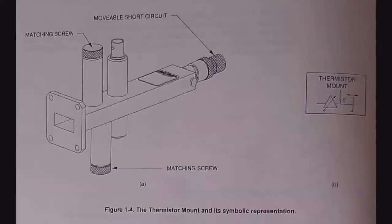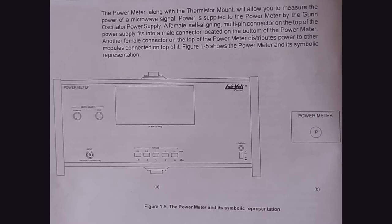A thermistor is a resistive device whose resistance is controlled by microwave energy. When microwave power is absorbed by the thermistor, its resistance changes, which is sensed by the power meter and indicated on the meter's display. Power reception of the thermistor can be controlled by two matching screws; the thermistor mount also has a movable short circuit. The thermistor is an integral part of the power meter — a Wheatstone bridge where three arms are inside the unit and the fourth arm is the thermistor. The meter should always be zeroed using the zero-adjust knob before use.